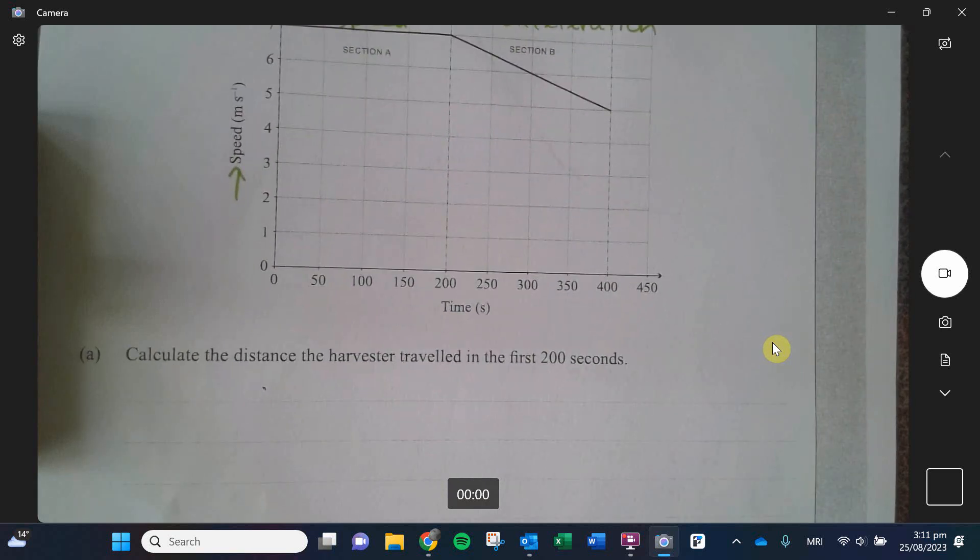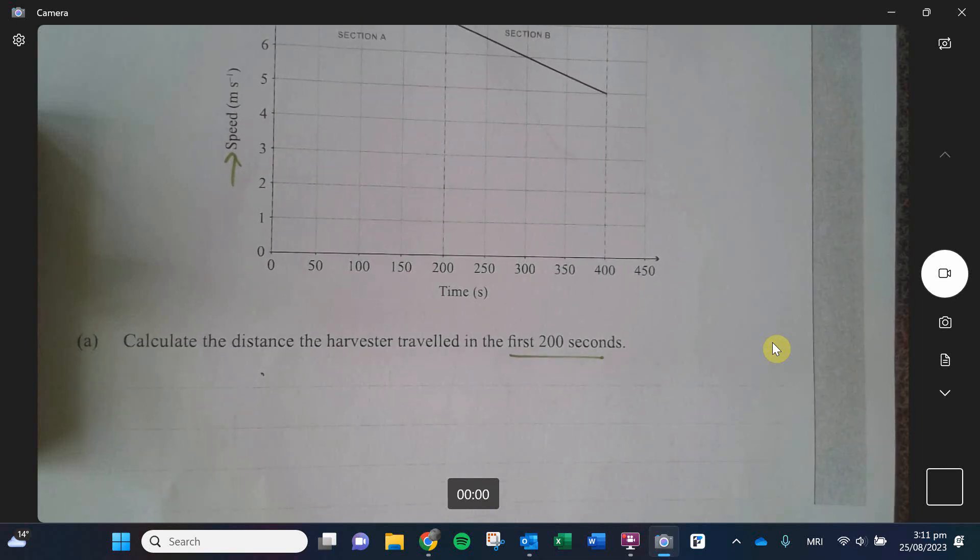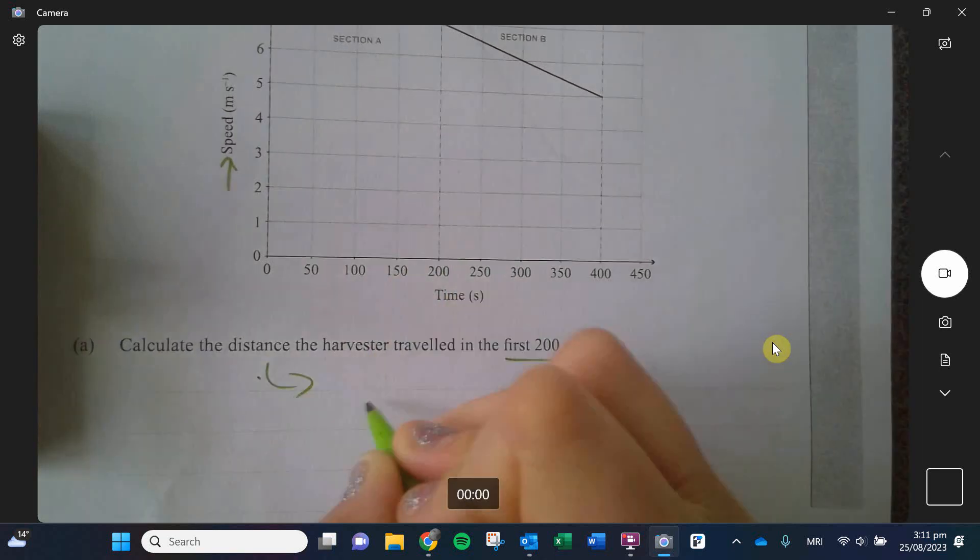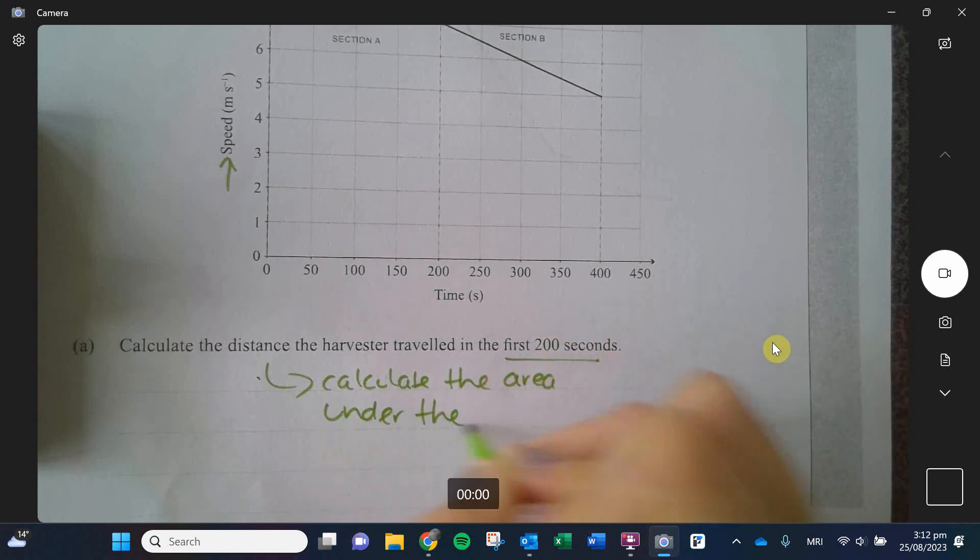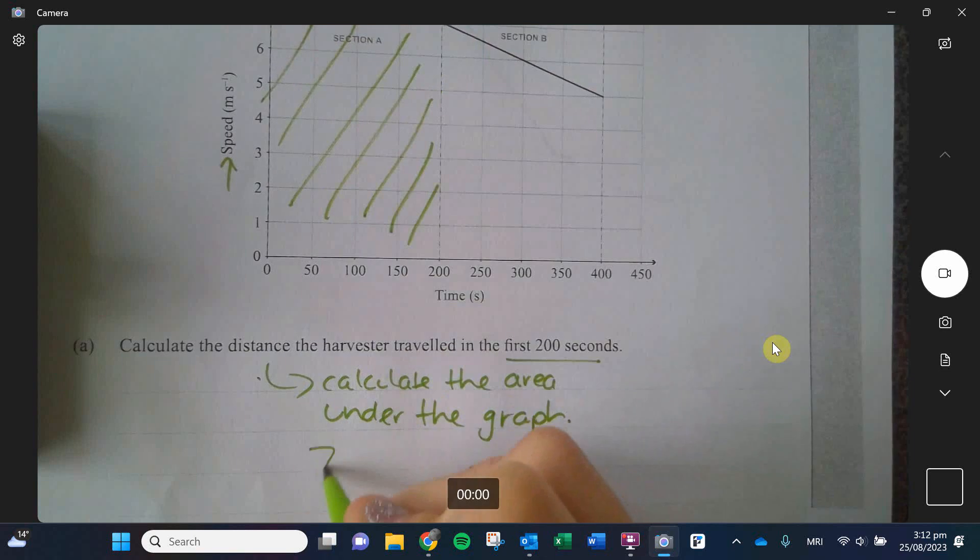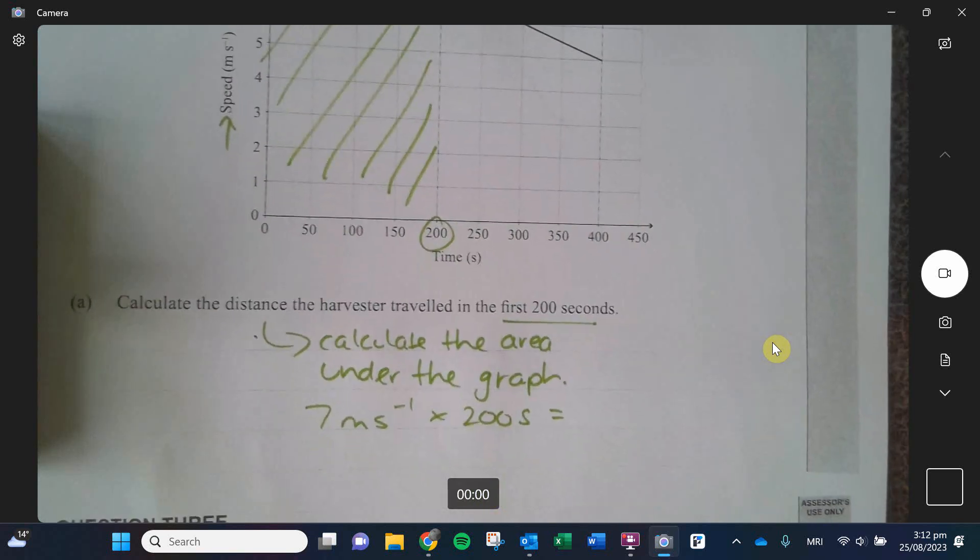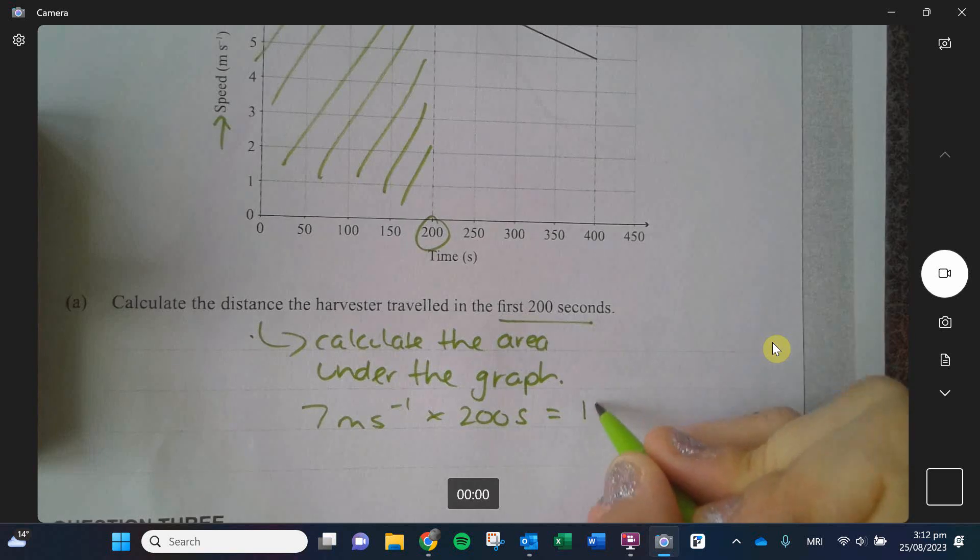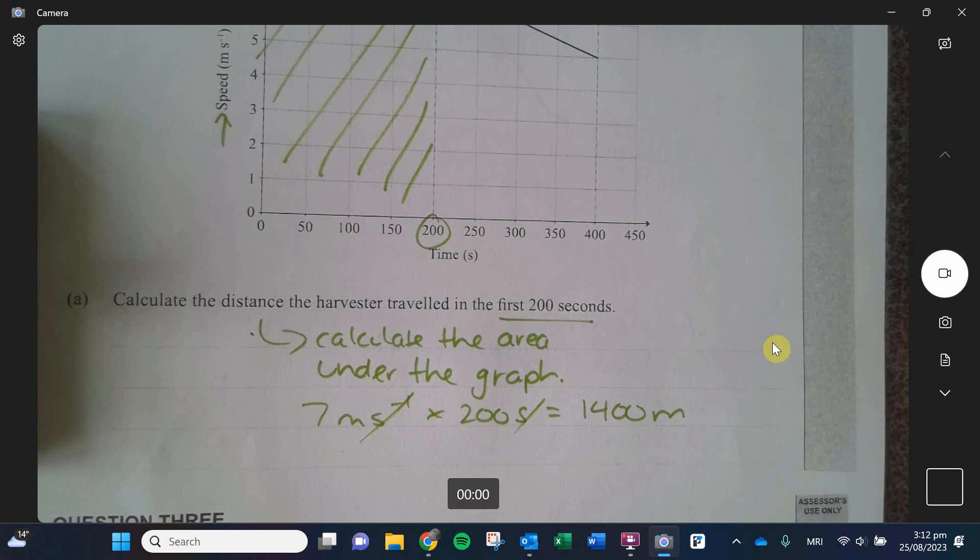Question A wants you to calculate the distance the harvester traveled in the first 200 seconds. So this case here, we are then thinking about the area under the graph, if I want to figure out distance traveled. So I'm calculating this section here. So I have traveled seven meters per second. And I've done that for 200 seconds. And that would get me my distance. So that, and that cancels out. My distance would be 1,400 meters.